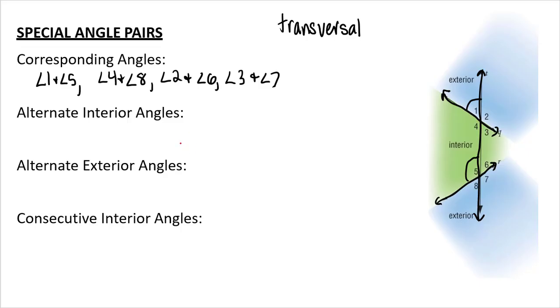Alternate interior angles. So alternate gives you the idea that there are alternating sides of your transversal. And they're in the interior. So angle four and angle six here would be alternate interior angles. Similarly, three and five.